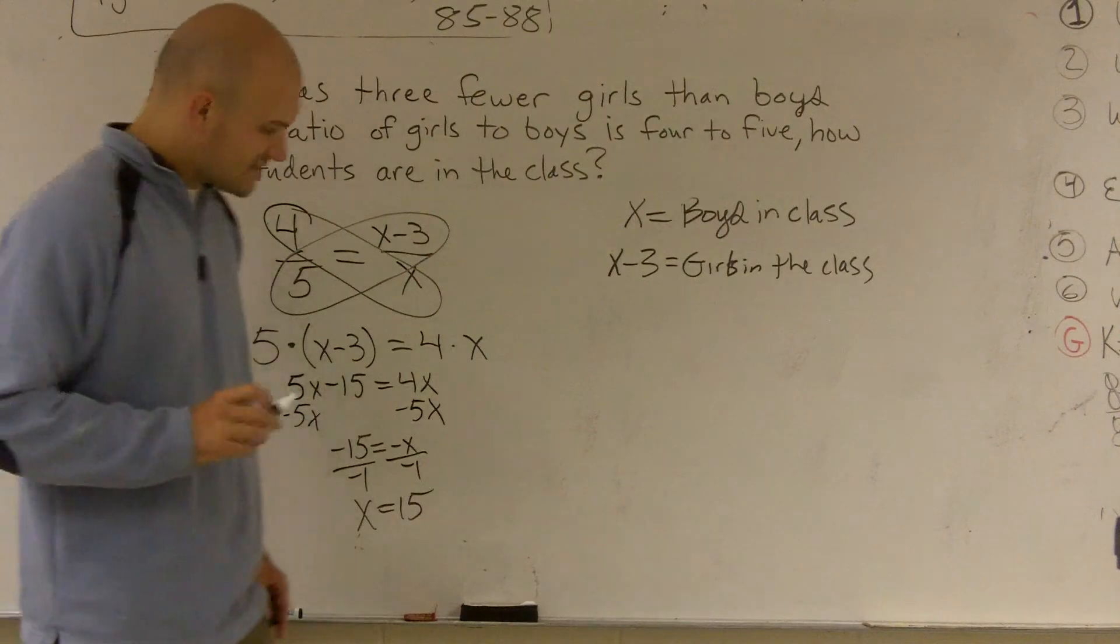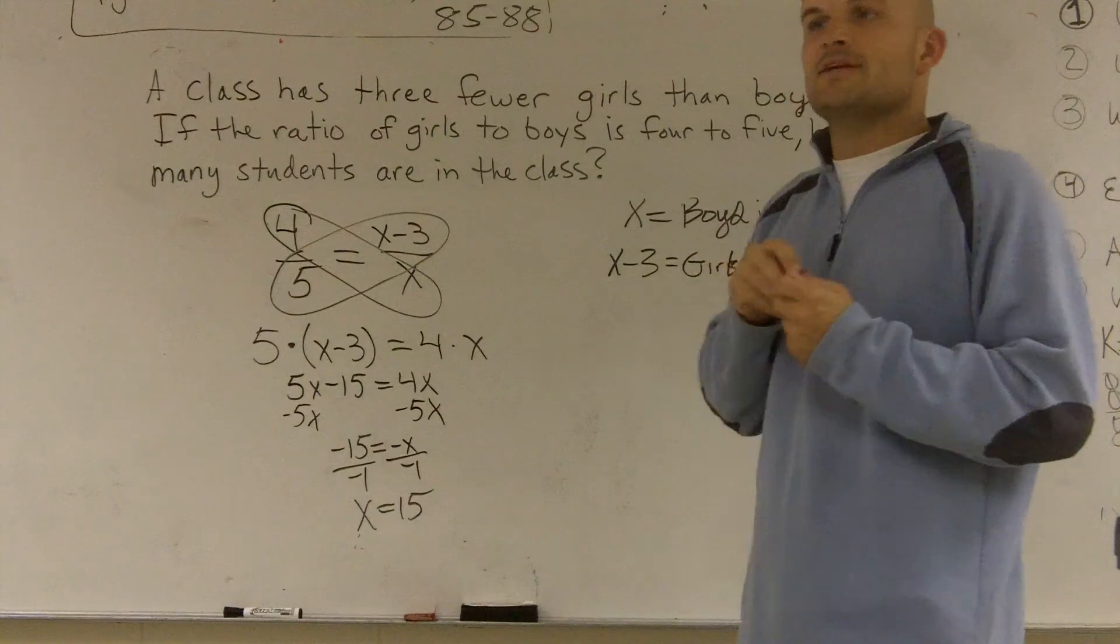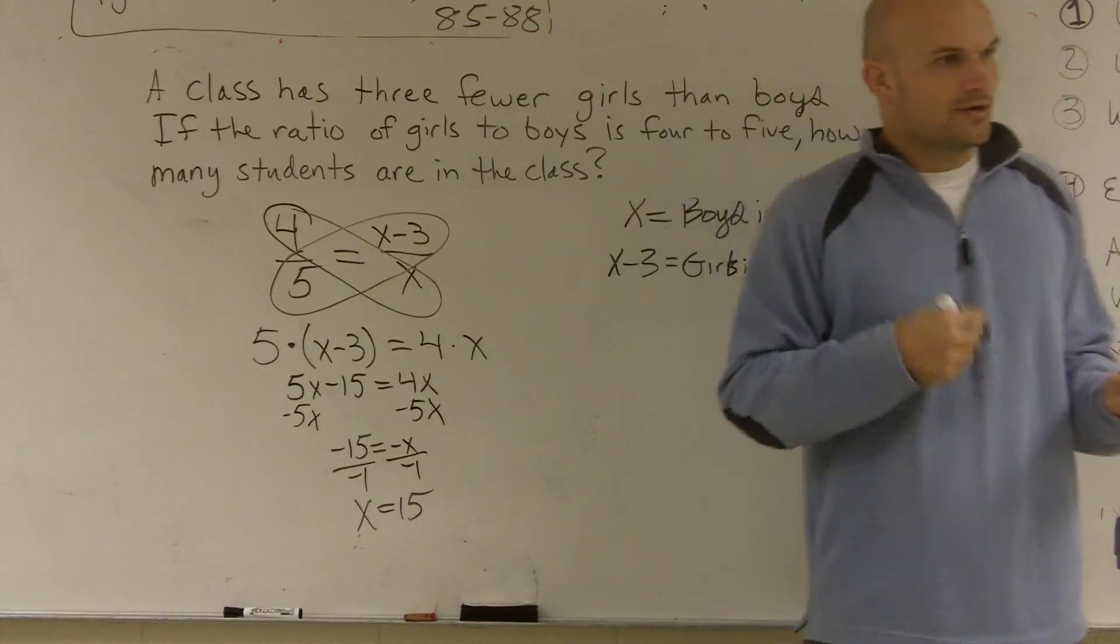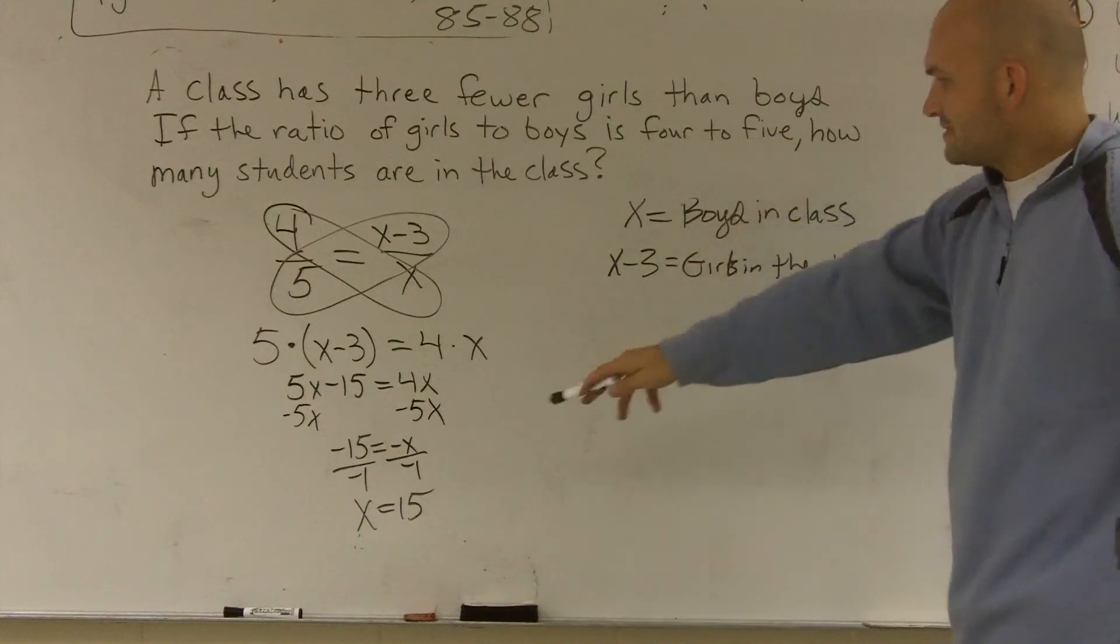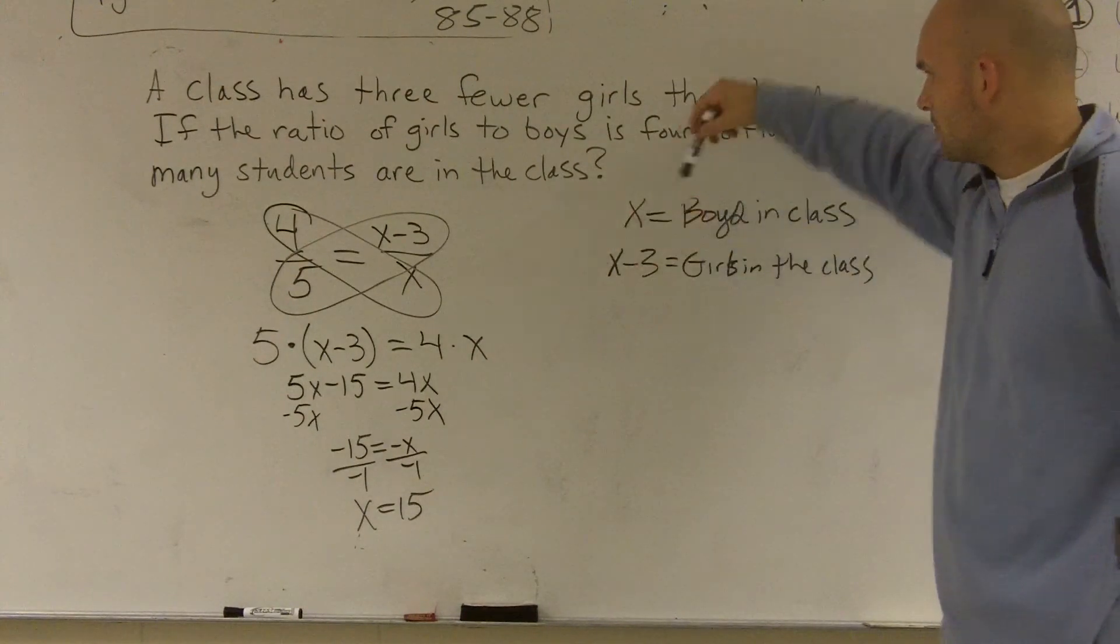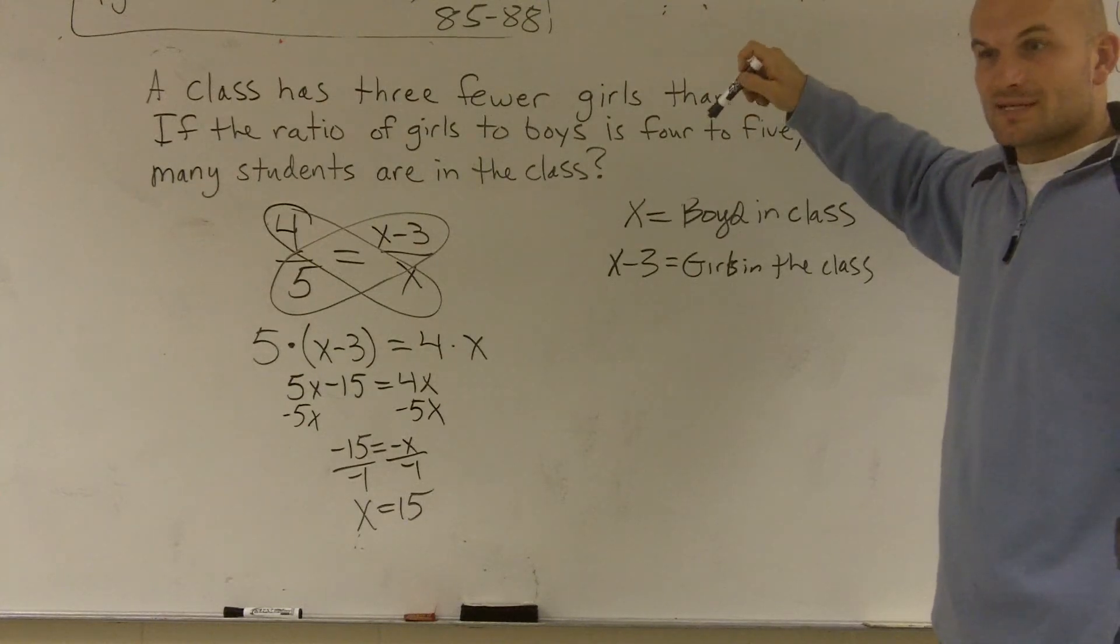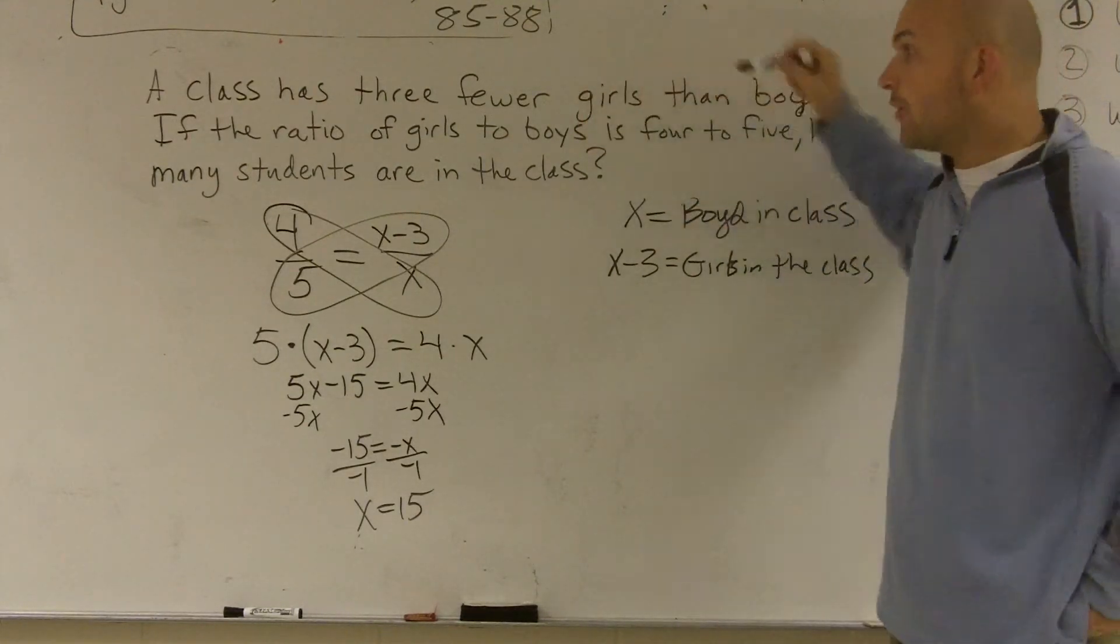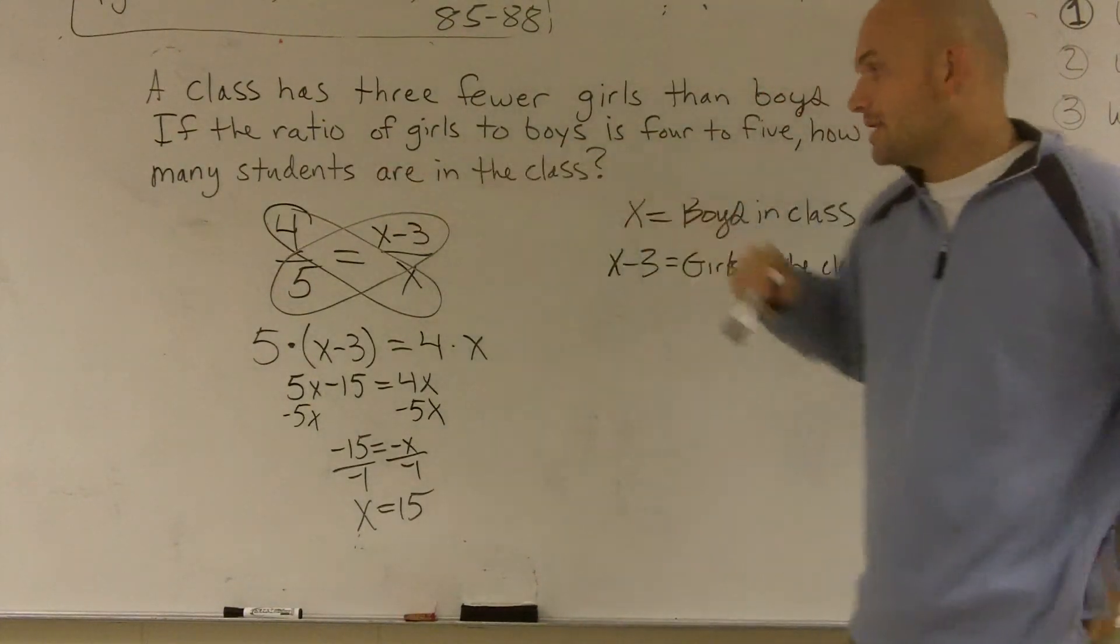Now this is where a lot of students stop and say, oh, I got it, the answer's done, right? Solved for my variable. But you always need to make sure that you check your answer, read it, and say, all right, is this what the question is asking? Well, 15 is equal to x. What does x equal? The boys in the class. Do we care about the boys in class? Well, yes. Is that what our answer is, though? No. Our question is asking us, how many students are in the class?